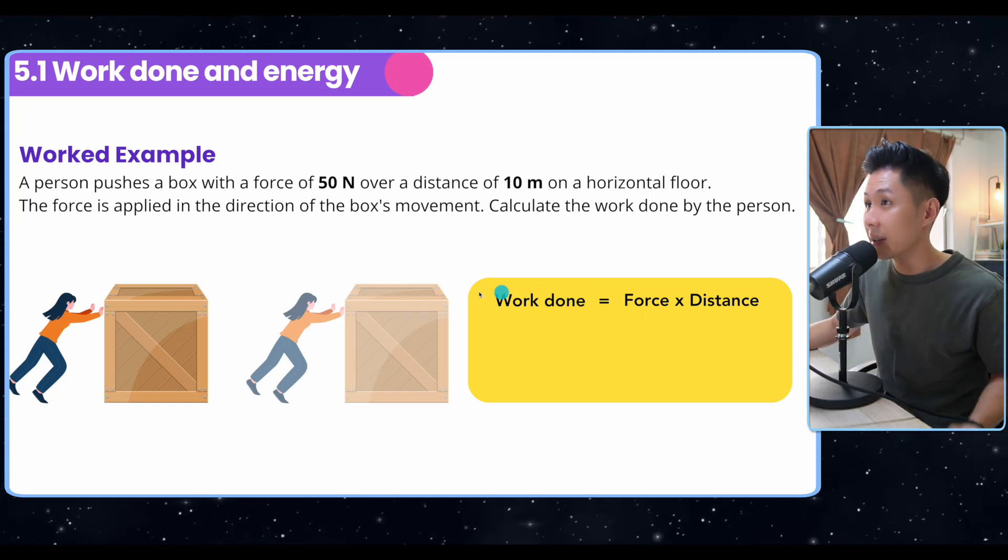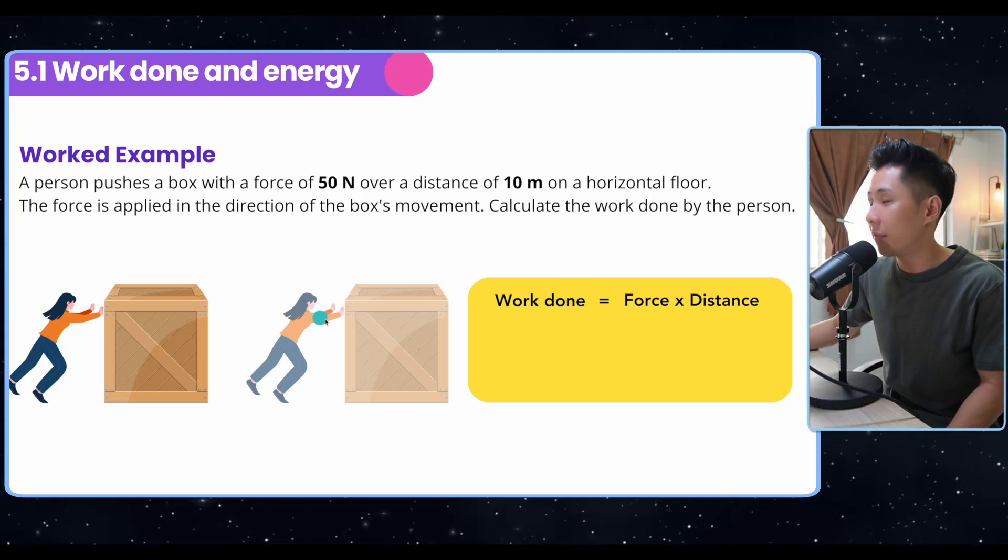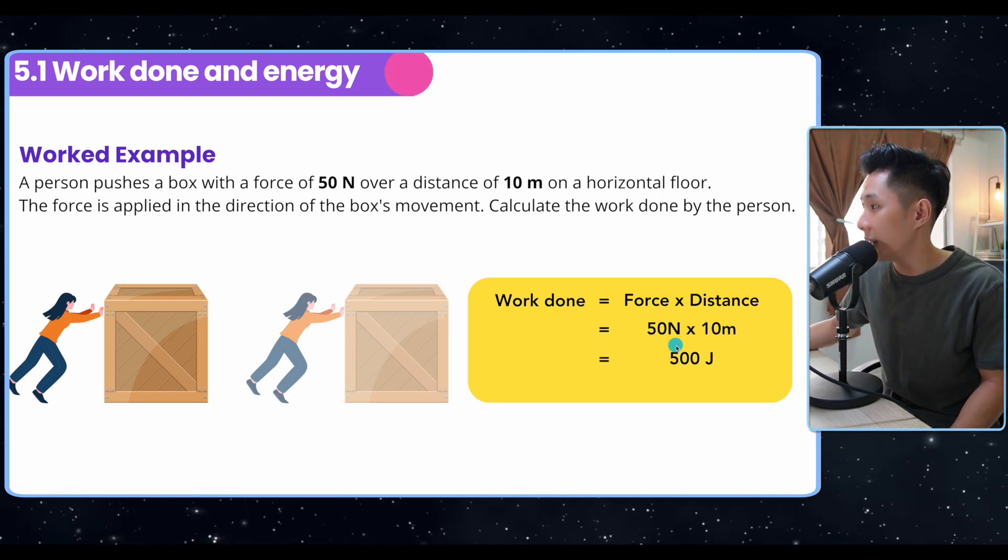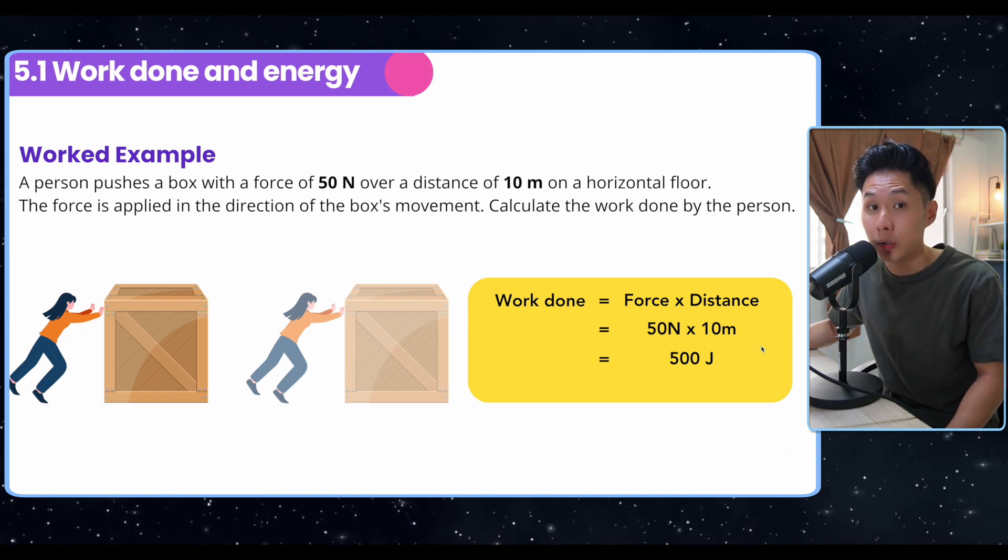So let's have an easy question here. A person pushes a box with 15 N over 10 meters. How much work is done? You can just substitute the value: 15 N multiplied by 10. You would have gotten 150 joules.